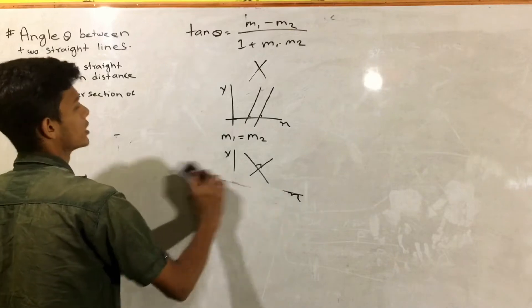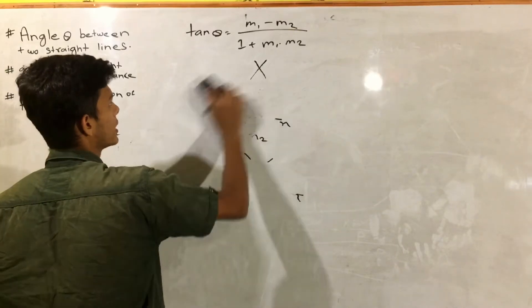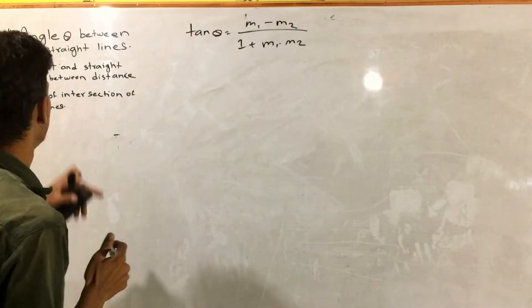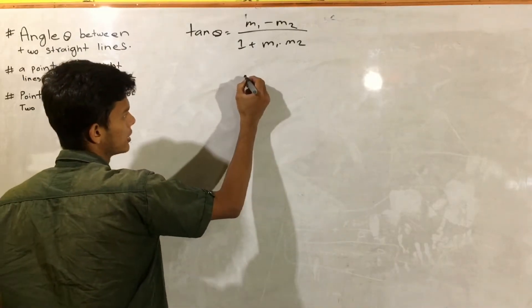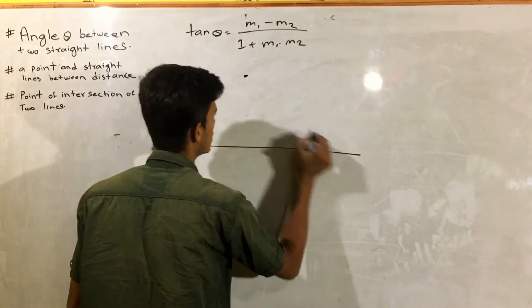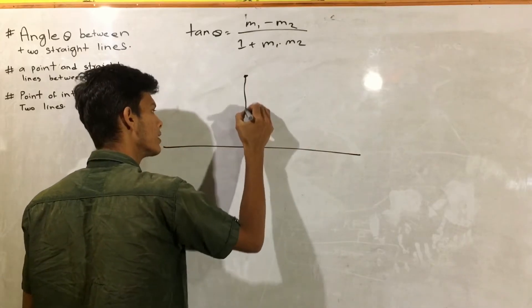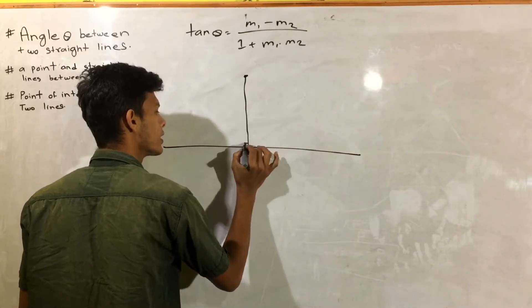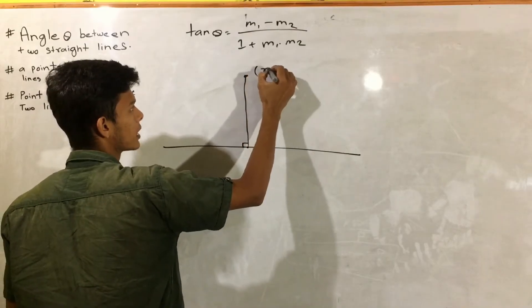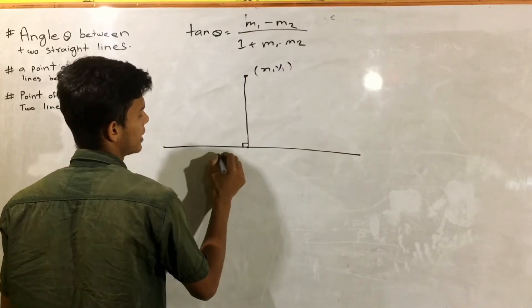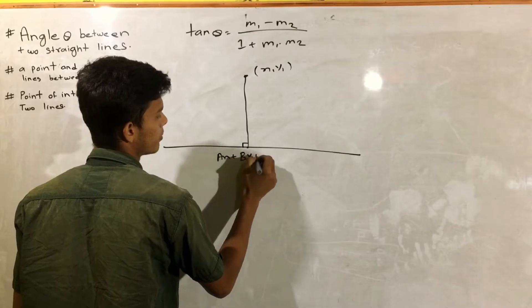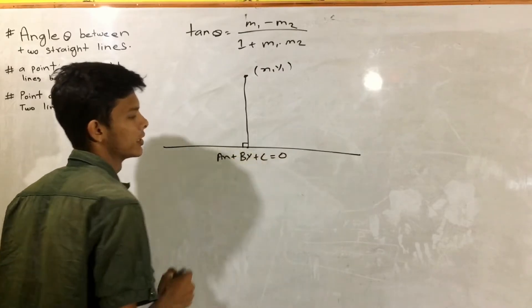This is M1 into M2 is minus 1. So this is the same point — this is the straight line. This point is 90 degrees and this point is x1 and y1.